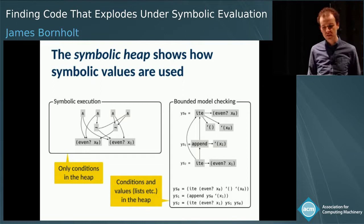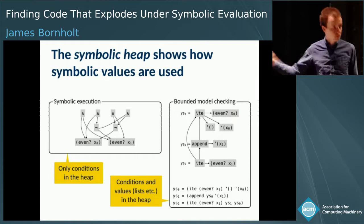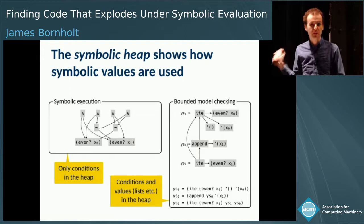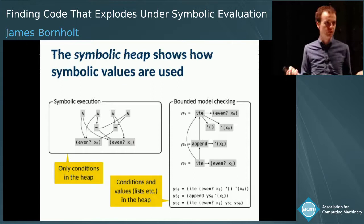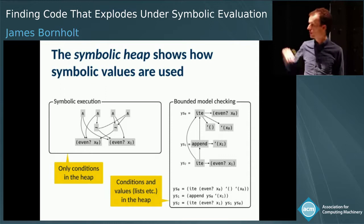Symbolic execution has really simple heaps but complicated evaluation graphs, and bounded model checking is the opposite. In practice, most symbolic evaluation engines end up somewhere in the middle. Choosing where you end on that spectrum is really the key to building a tool that scales well. Having these two data structures lets us tell you how to build a tool that scales.